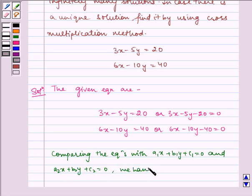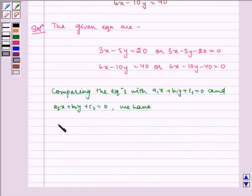we have a1 equals 3, a2 equals 6, b1 equals minus 5, b2 equals minus 10, c1 equals minus 20, c2 equals minus 40.